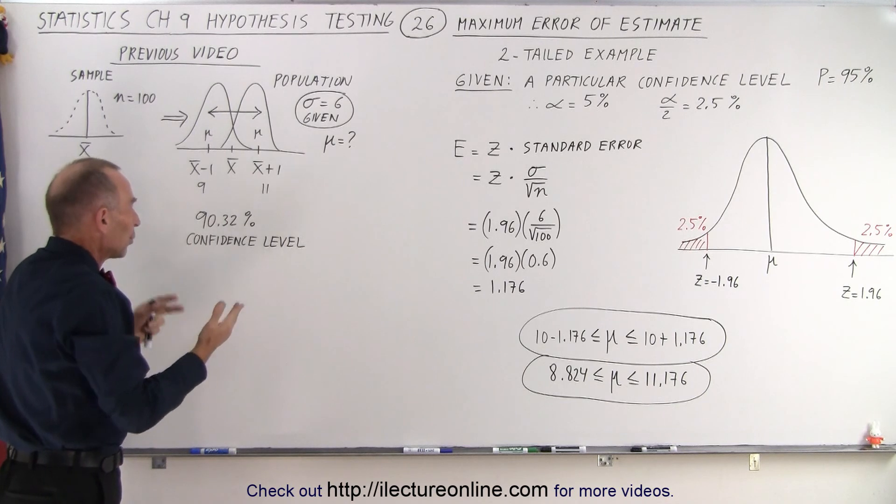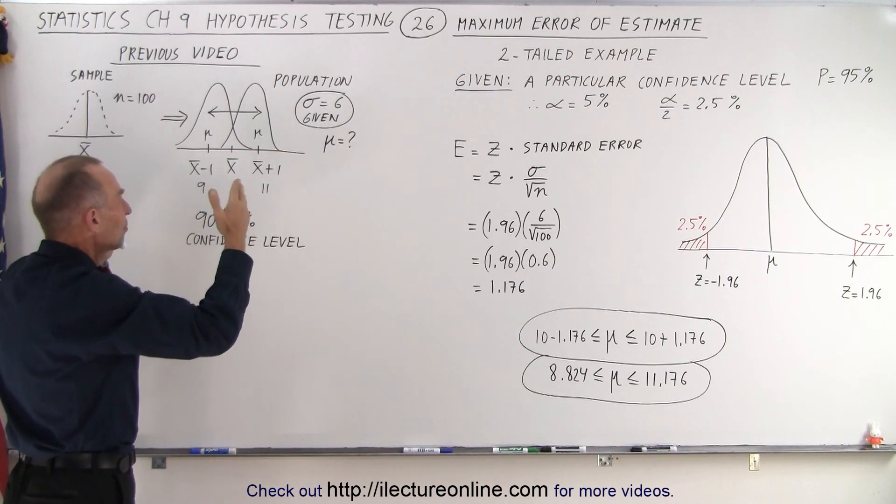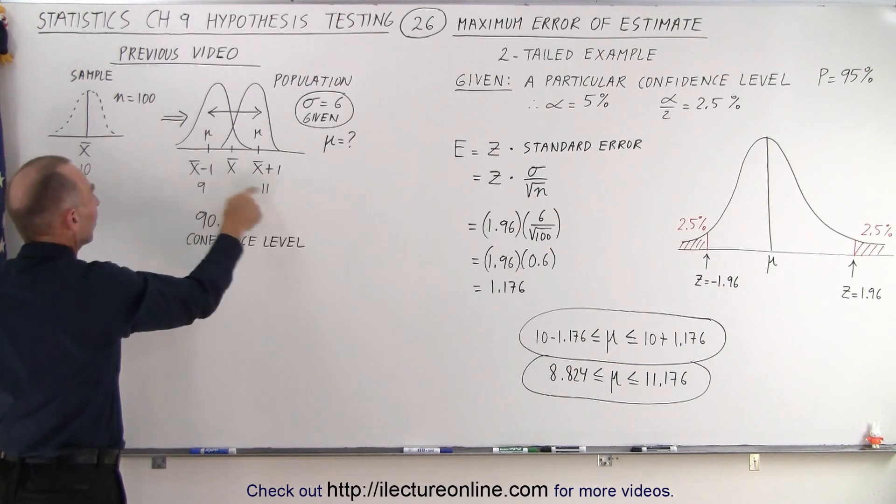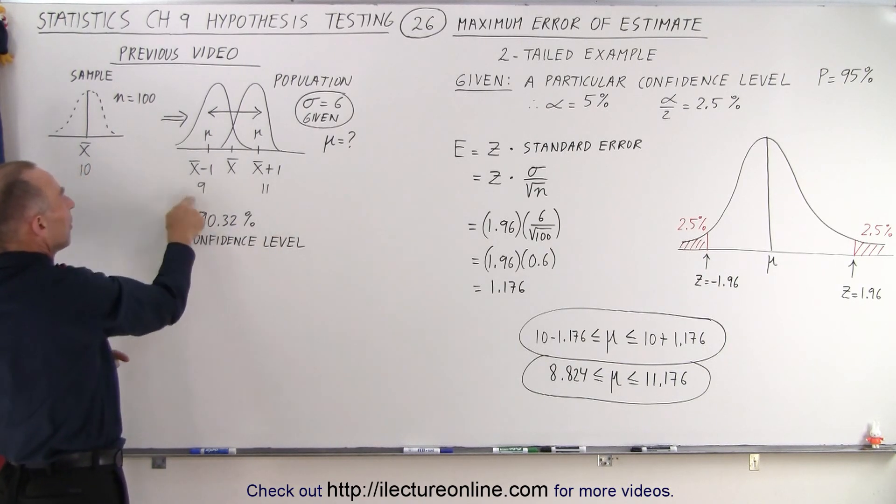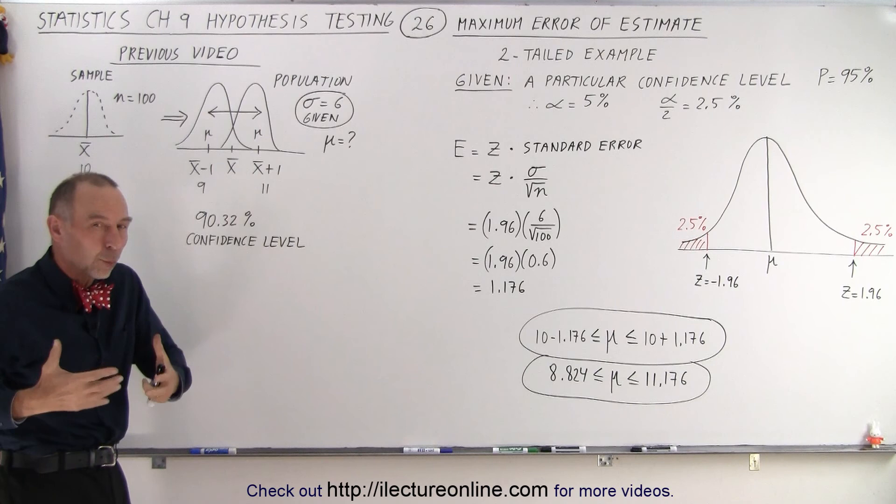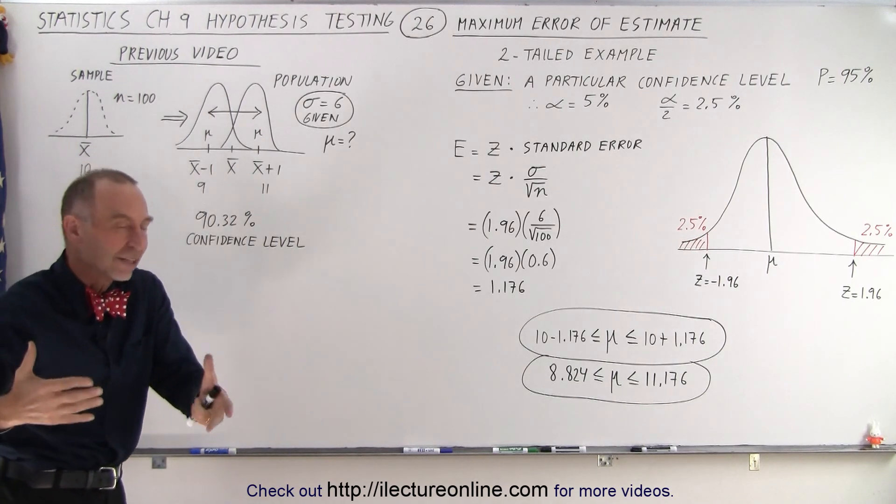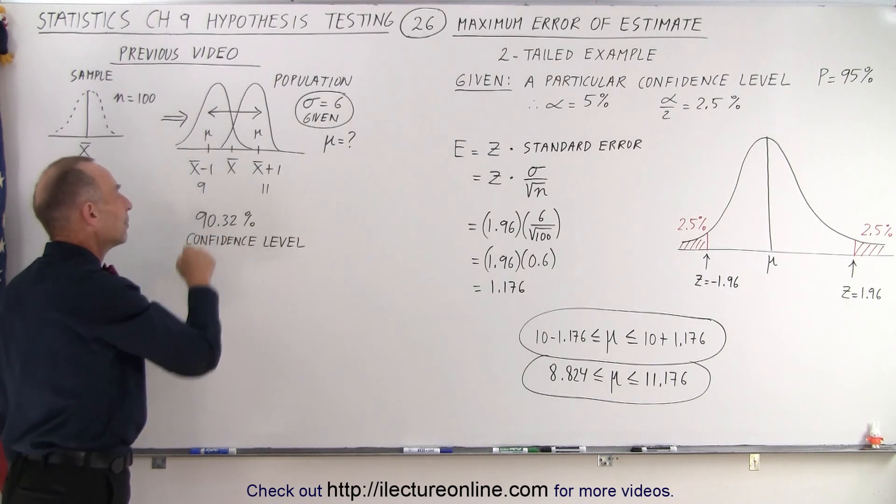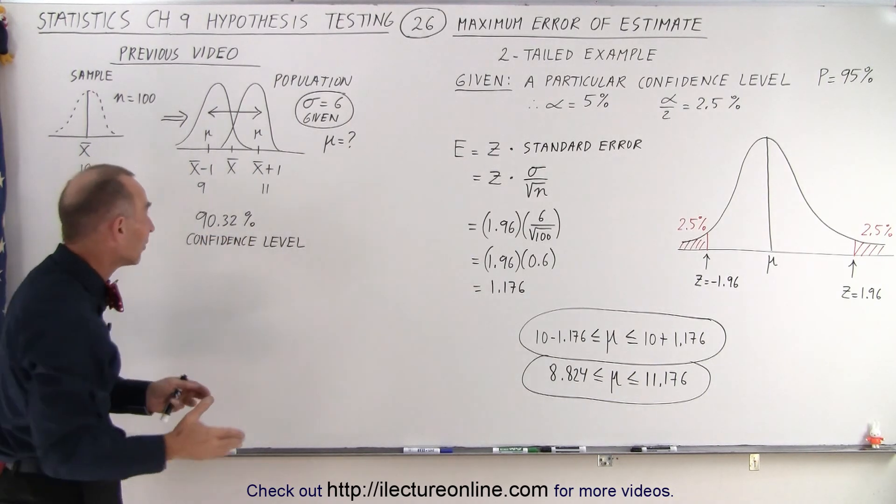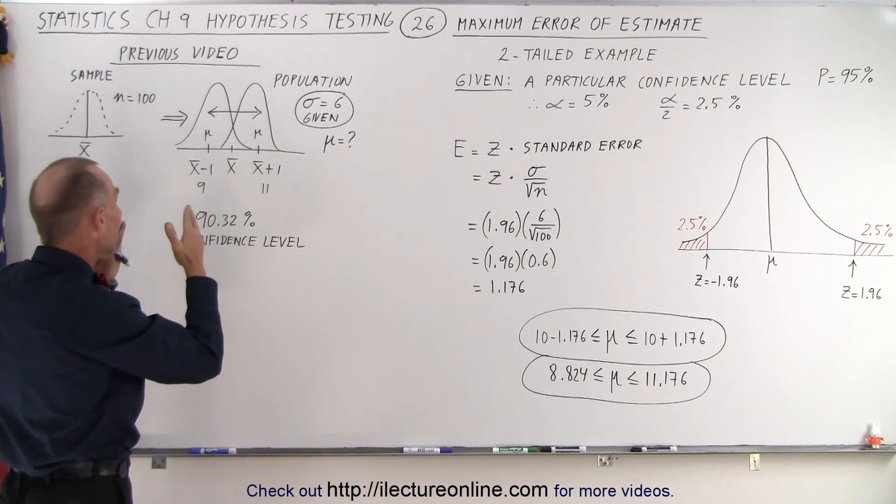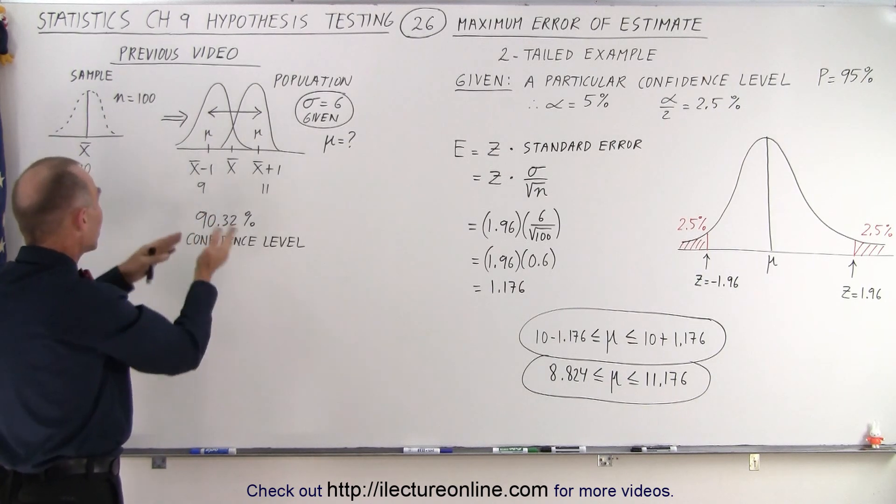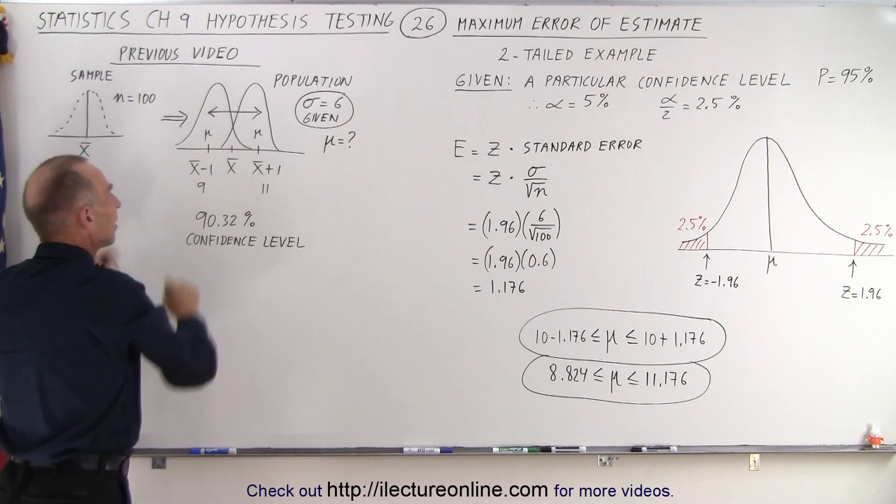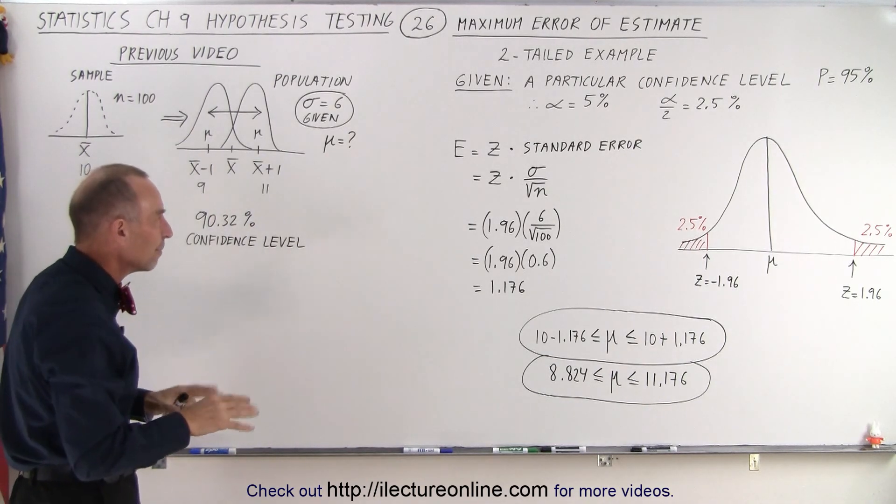So we assumed we're going to set the population mean somewhere between the mean of the sample plus 1 and the mean of the sample minus 1. Then we tried to figure out what is our level of confidence that that is actually correct. When we calculated it, we came out with 90.32% confidence level that the mean of the population was somewhere between 9 and 11.